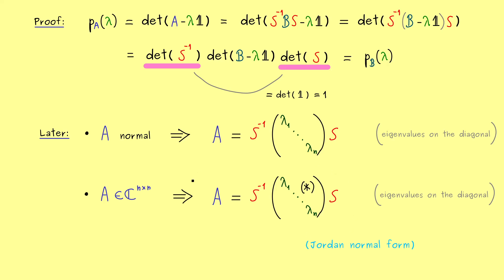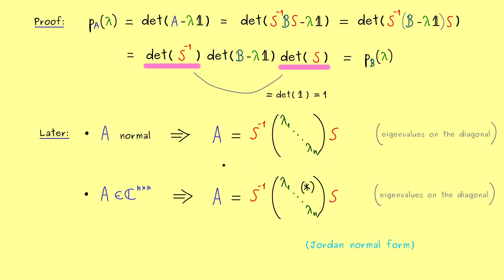If you are already interested in that result, one can make it more precise with the so-called Jordan normal form. I already have a video series about that, so you can already watch how to calculate this Jordan normal form. However, we can also talk about that in a later video in this series. But before we can prove these strong results, we really first have to know how to calculate eigenvectors. This is because inside this matrix S and S inverse, we find something that is related to the eigenvectors of A. This means calculating eigenvectors is something you need to do in order to get this transformation. Therefore, this is something we will do in the next video. Have a nice day and bye bye.